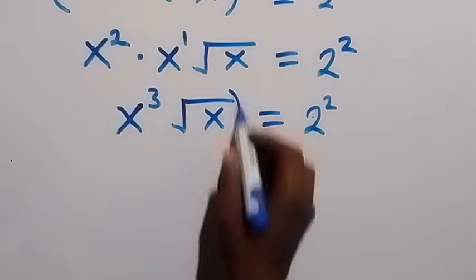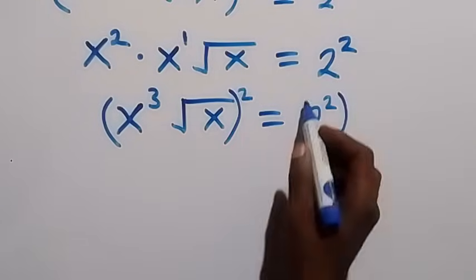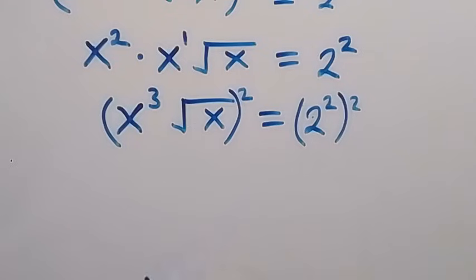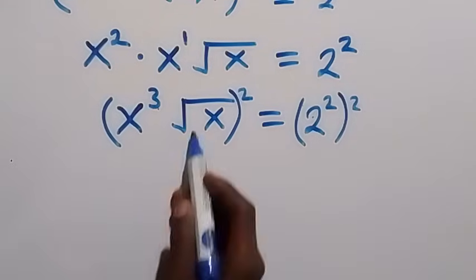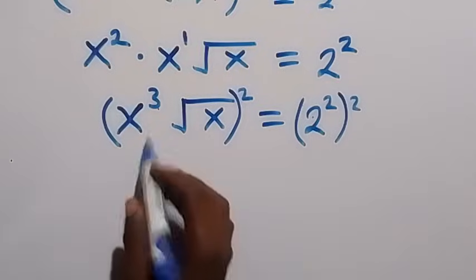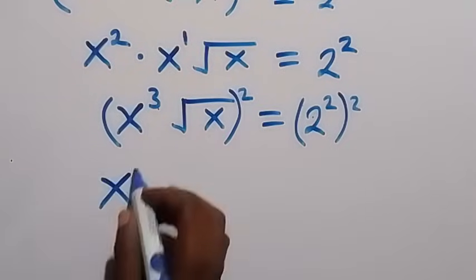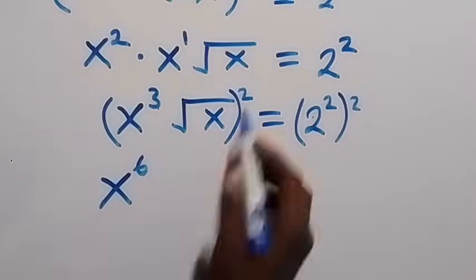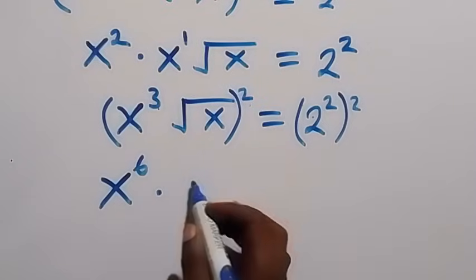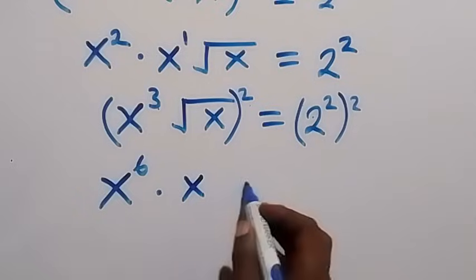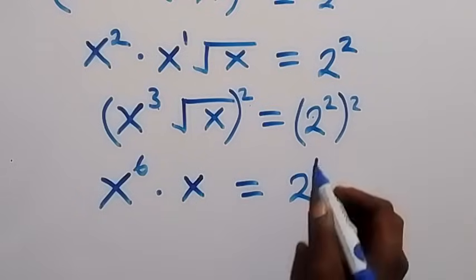From here we can now square both sides again. This square affects x cubed and also root x, so x cubed becomes x raised to power 6 (3 times 2 is 6), then the square cancels the square root and we have x left, which equals 2 raised to power 4 (2 times 2), which is 4.